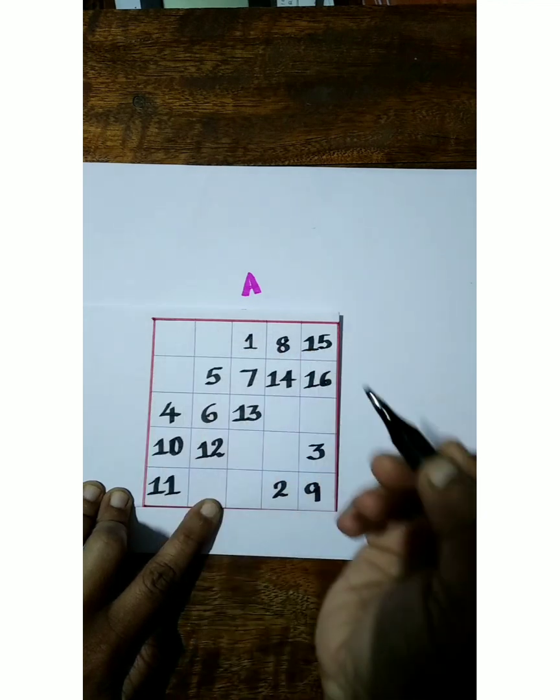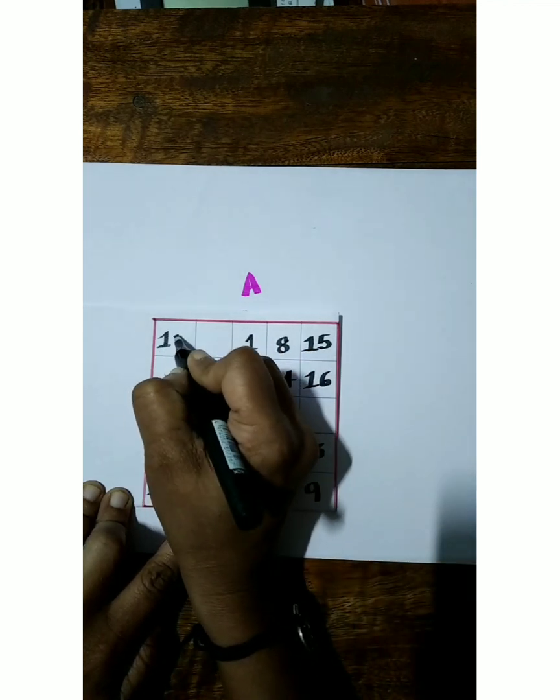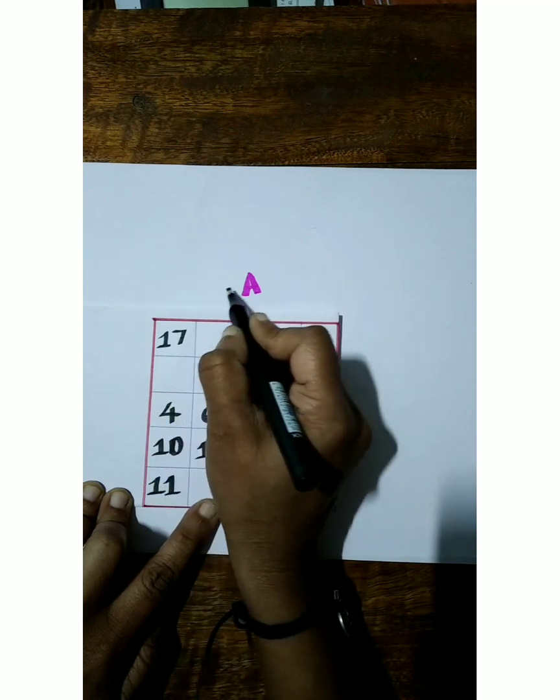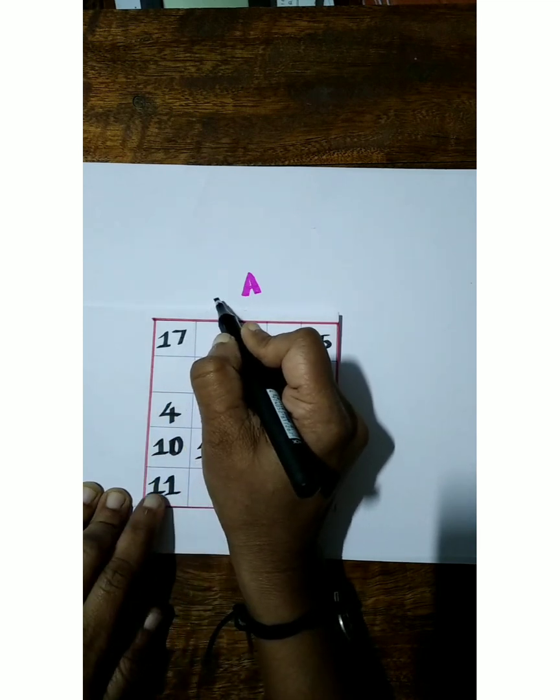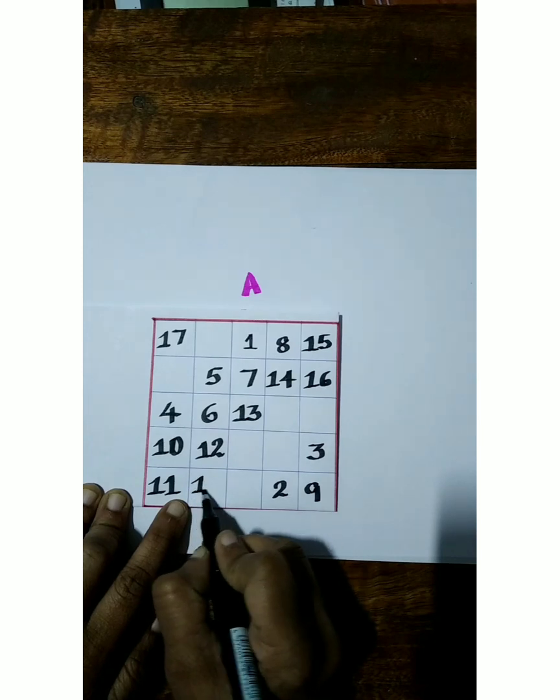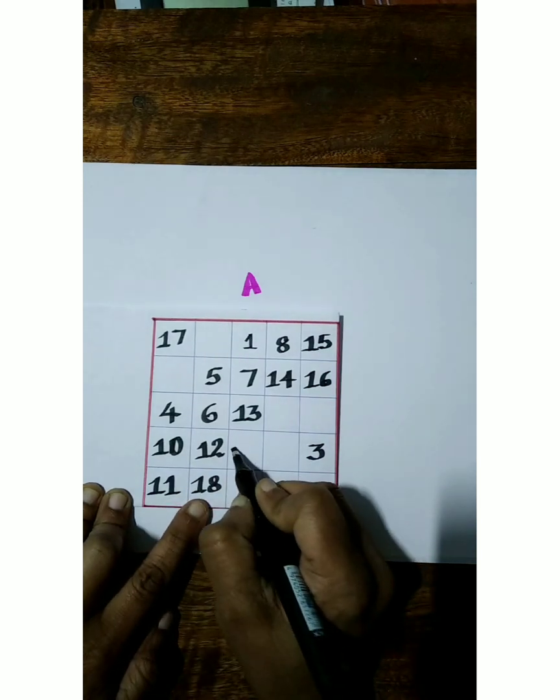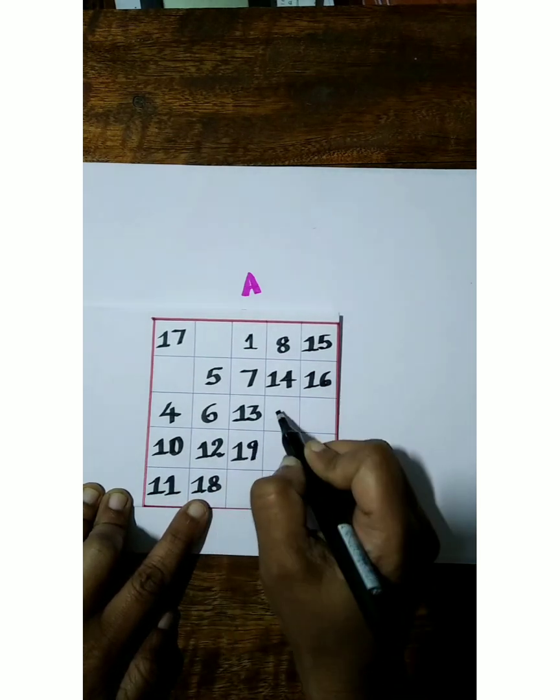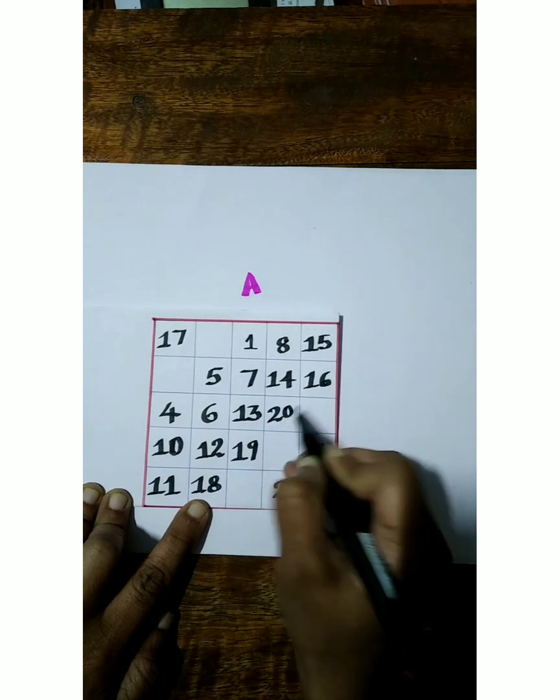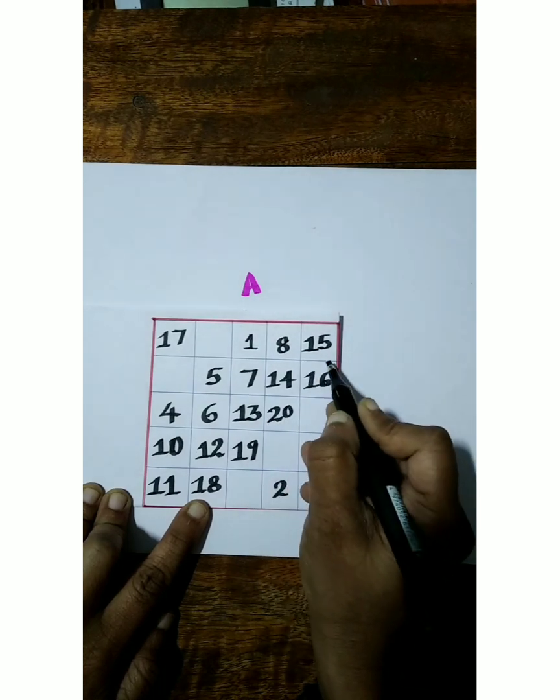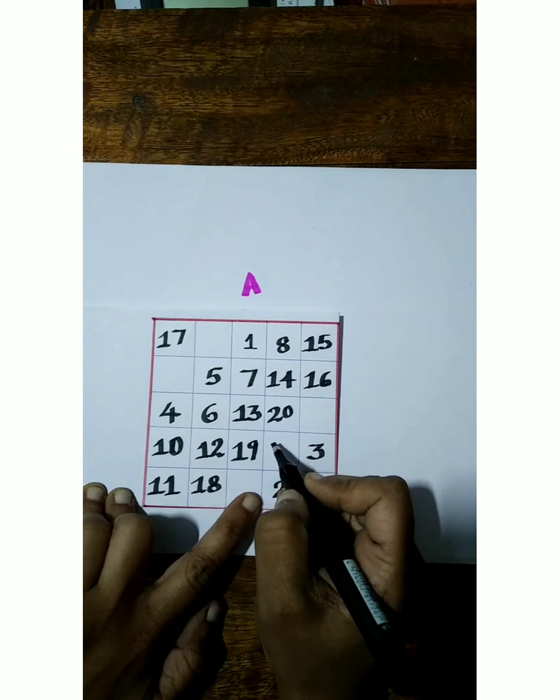Diagonal here 19, 20, and 21 here, but that box is filled. Just right below of that 20, 21.